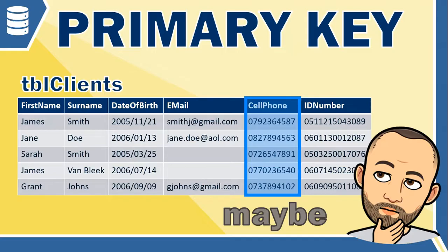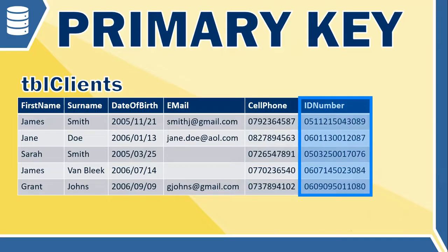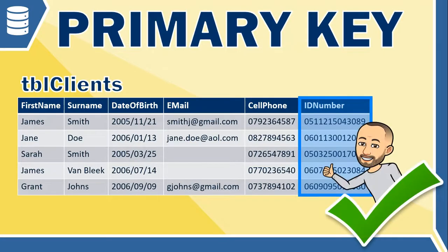Does everyone have a cell phone number? Maybe — so cell phone is a potential primary key, but only if we assume everyone has one. If we make it a primary key field, we'd have to require that everyone must have a cell phone to have their data placed in our database. Now let's consider ID number. Can two people have the same ID number? Definitely not. Does everyone have one? Everyone gets allocated one, so it can't be blank.